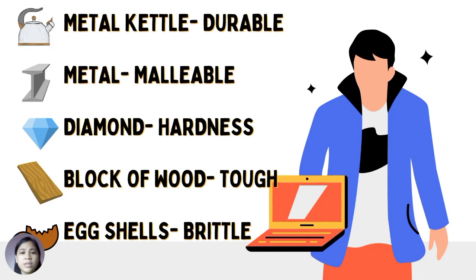Our prior knowledge about the characteristics of solid, liquid, and gas will help us determine their properties and uses in our daily lives. You can describe a metal kettle by saying that it is strong and durable. A metal is also malleable. Malleability means that a metal can be hammered and formed into sheets which can be used for a variety of different purposes. The performance of some solid materials considers the response to external forces. Hardness is a measure of the amount of force that an object can withstand, and tough materials like block of wood will not break easily, in contrast to materials that are brittle like egg shells.